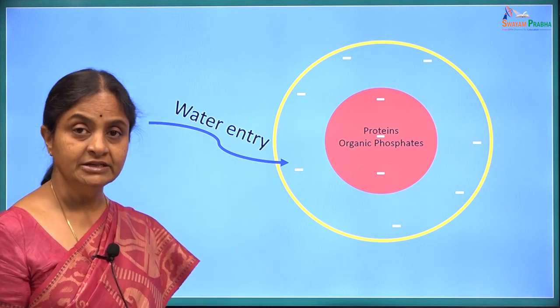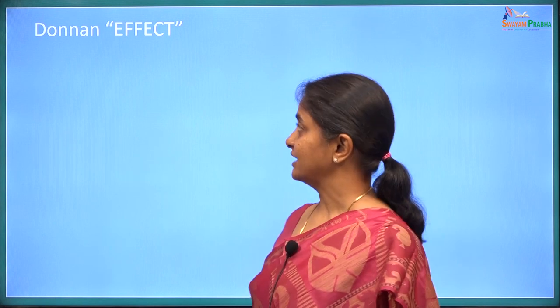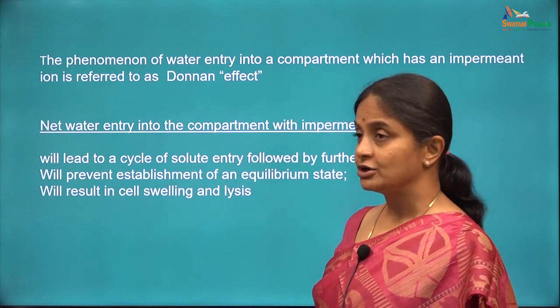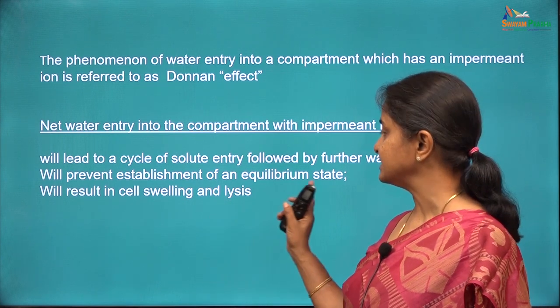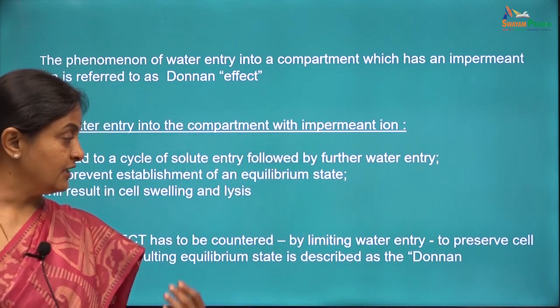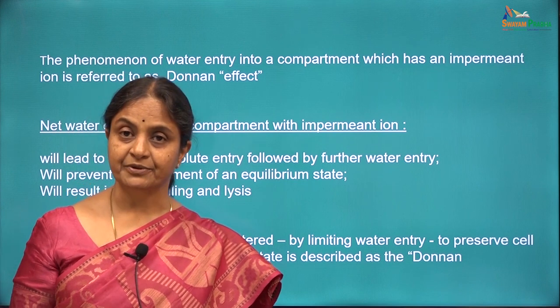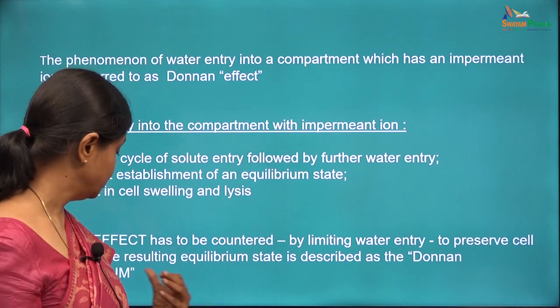If the water entry is not prevented, the cell will swell — an animal cell will swell and eventually lyse. This is indeed what we refer to as the possible outcome of the Donnan Effect. Net water entry into the compartment with the impermeant ion, because of the higher osmolarity within that compartment, will lead to a cycle of solute entry followed by further water entry and will prevent the establishment of an equilibrium state, resulting in cell swelling and lysis. This effect has to be countered if the cell has to maintain its volume by limiting water entry. If water entry is prevented, then an equilibrium state can be achieved, and that equilibrium is what is referred to as the Donnan Equilibrium.